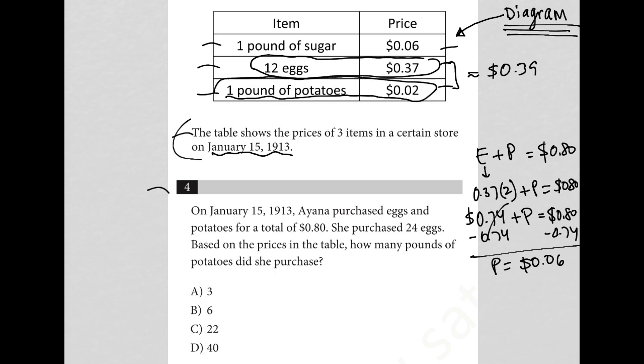So if one pound of potatoes cost 2 cents but we know that Ayana has spent 6 cents on potatoes, that tells us that she has purchased three pounds. Right, so she's purchased three pounds because 3 times 2 cents